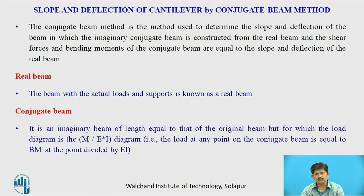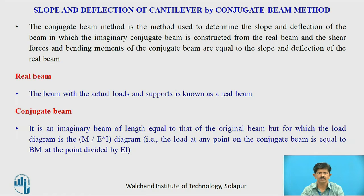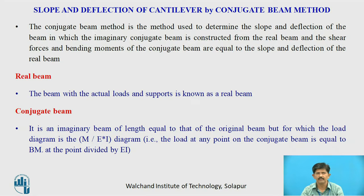So what is the conjugate beam method? The conjugate beam method is the method used to determine the slope and deflection of a beam, in which an imaginary conjugate beam is constructed from the real beam. The shear force and the bending moment of the conjugate beam are equal to the slope and deflection of the real beam.